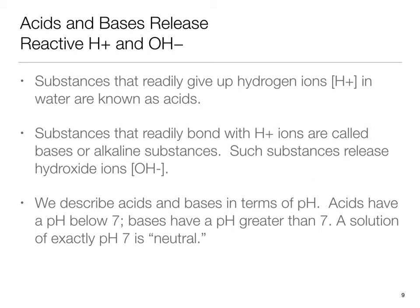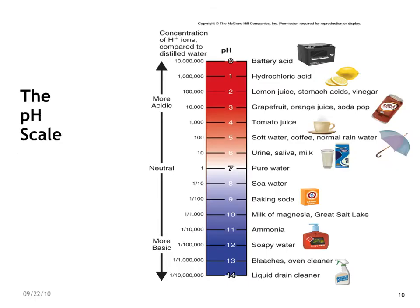We describe acids and bases in terms of pH, the negative logarithm of the concentration of hydrogen ions. Acids have a pH below 7. Bases have a pH greater than 7. A solution of exactly pH 7 is neutral. Because the pH scale is logarithmic, pH 6 represents 10 times more hydrogen ions in solution than pH 7. A solution can be neutralized by adding buffers — substances that accept or release hydrogen ions. The numbers on the pH scale represent the negative logarithm of the hydrogen ion concentration in water.